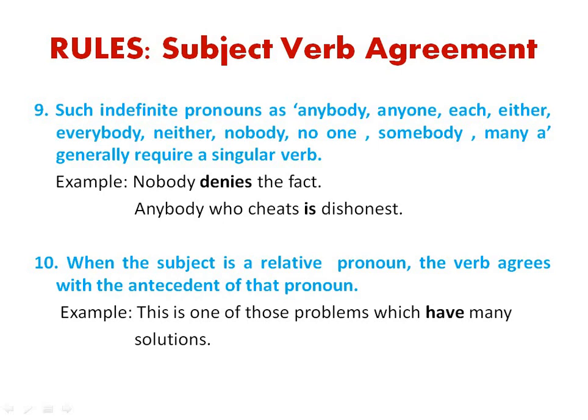Rule 10: when the subject is a relative pronoun, the verb agrees with the antecedent of that pronoun. For example, 'this is one of those problems which have many solutions' — we use 'have' because we are relating it to the antecedent pronoun.